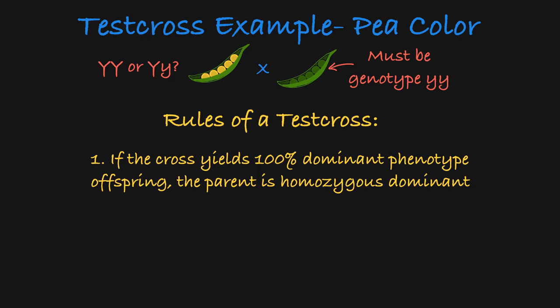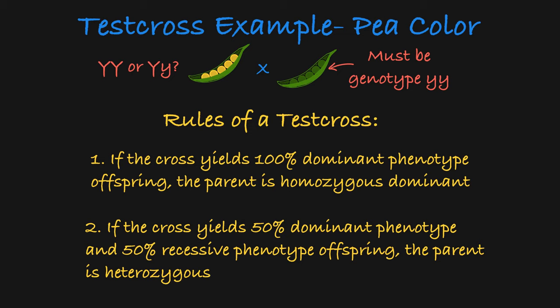All of these offspring must be heterozygous. If the test cross yields 50% dominant and 50% recessive phenotypes within the offspring, then you know that the parent was heterozygous, passing on its dominant allele 50% of the time and its recessive allele 50% of the time.